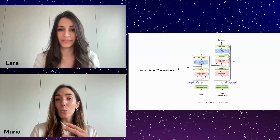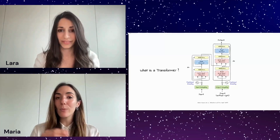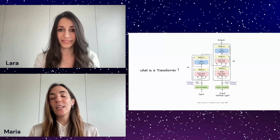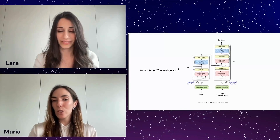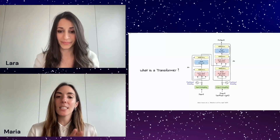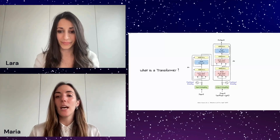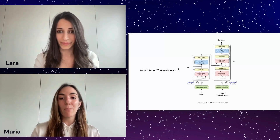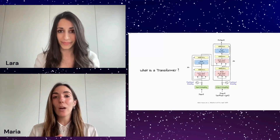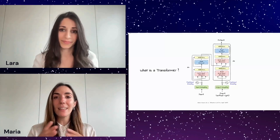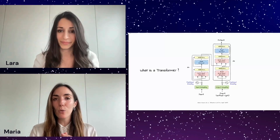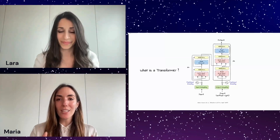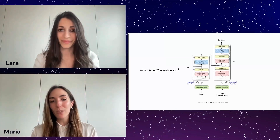Since the encoder created this different representation of the input data, the decoder takes this and generates the output sequence — like the translated sentence in French. It works in a step-by-step manner, which is why in different LLMs you see words being created one by one as you prompt it.